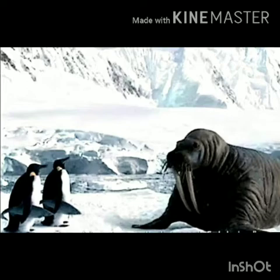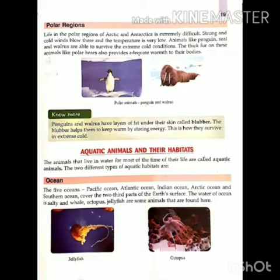Penguins and walrus have a layer of fat under their skin. The blubber helps them to keep warm by storing energy. Blubber urja ko jamah karke unhyeh garm rakhne mein madad pahunchaati hai. This is how they survive in extreme cold. Isi tarah se ye jeev adhik thand mein bhi jinda reh sakte hai.